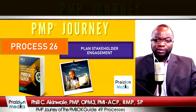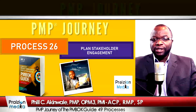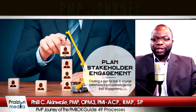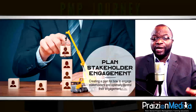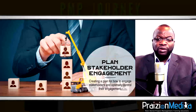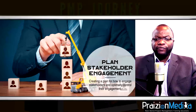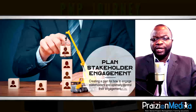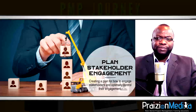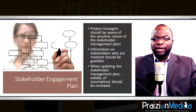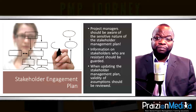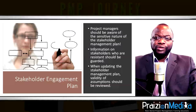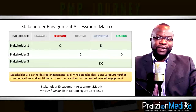Process 26: Plan stakeholder engagement — the final process in planning. This is where you plan how to keep your already-identified stakeholders engaged, perhaps through certain meetings or face-to-face engagements. You develop a stakeholder engagement plan to engage stakeholders in a proactive and meaningful fashion, and this is also where you use the stakeholder engagement assessment matrix.